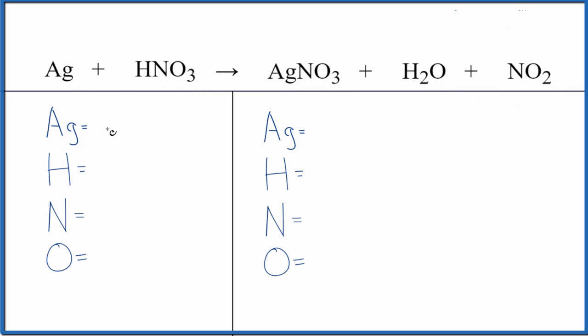So let's count the atoms up. We have one silver, one hydrogen, one nitrogen, and three oxygen atoms. Product side, we have the one silver. Hydrogens, we have two of those. And here's where you need to be careful.